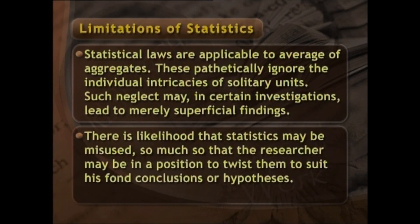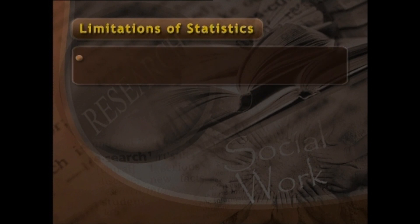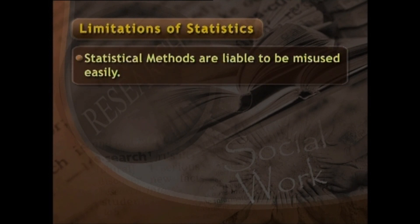Statistical laws pathetically ignore the individual intricacies of solitary units; such neglect may in certain investigations lead to merely superficial findings. The social and human sciences typically have a keen concern for the unique and idiosyncratic aspects. Additionally, there is a likelihood that statistics may be misused, so much so that a researcher may be in a position to twist them to suit his foregone conclusions or hypothesis. This is where great caution needs to be exercised in using statistical methods, as they are liable to be misused easily.